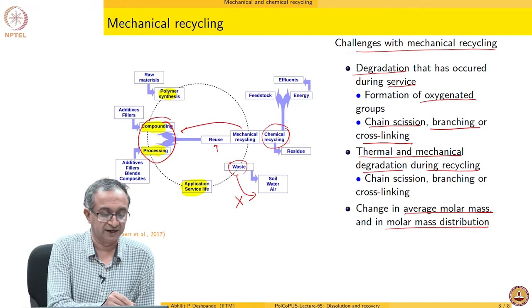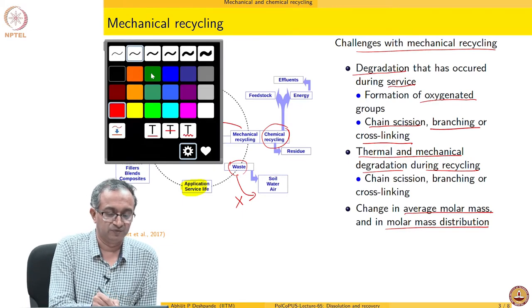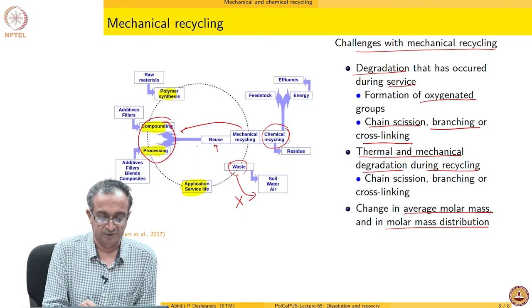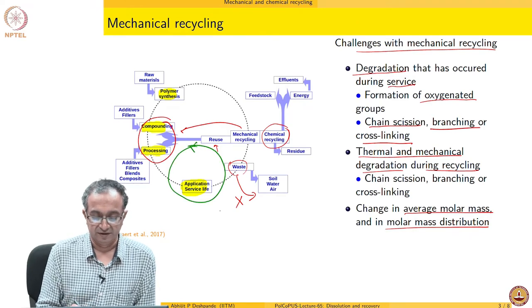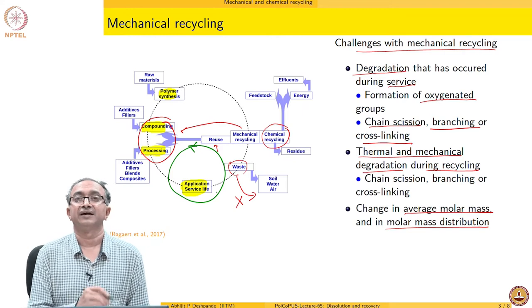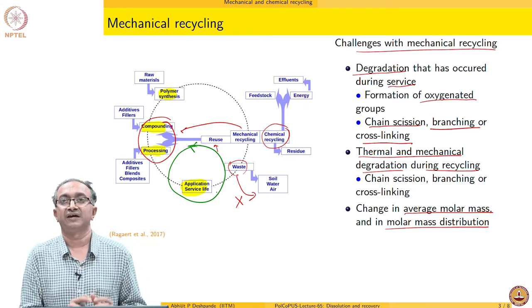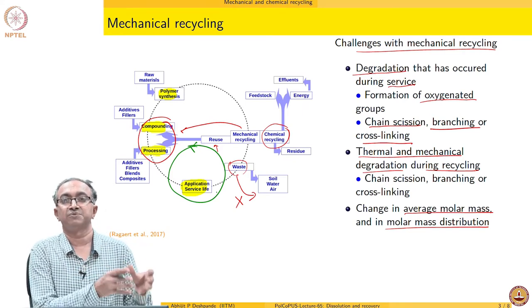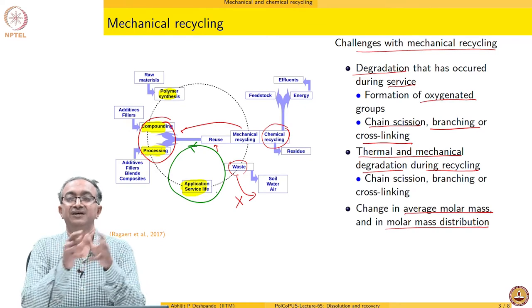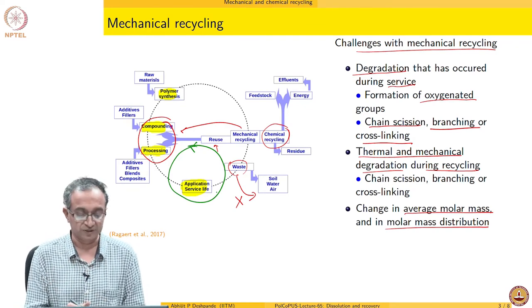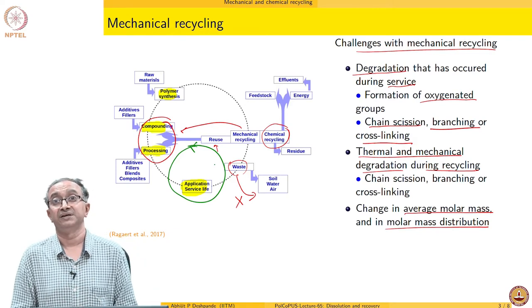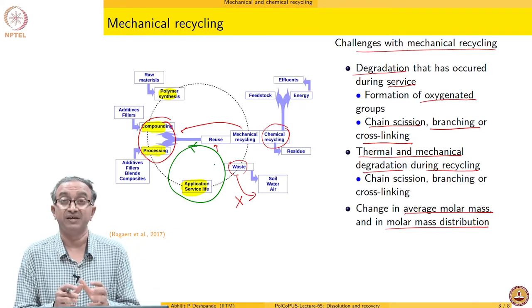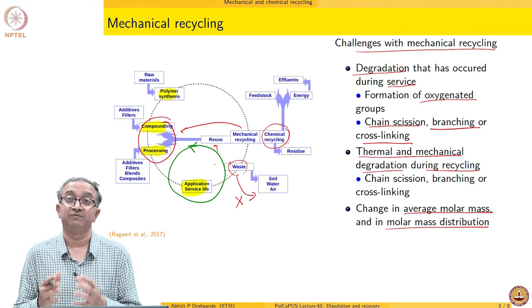When we are trying to do this again and again, ideally what we would like is if we once make the polymer and if we can just do this cycle again and again that we use the service life, then mechanically recycle, do compounding processing, use it again. This will be an ideal thing. But unfortunately, at each recycle, there is a degradation in property. Therefore, chemical recycling is also an effective way.